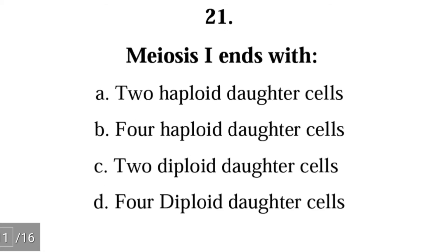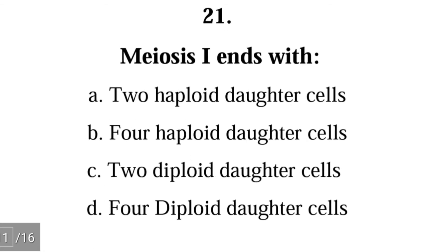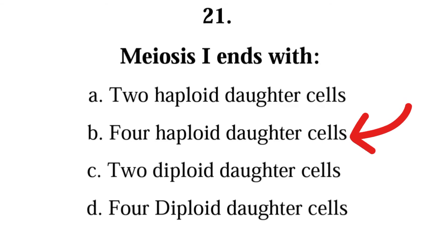Question 21: Meiosis 1 ends with — A. 2 haploid daughter cells, B. 4 haploid daughter cells, C. 2 diploid daughter cells, D. 4 diploid daughter cells. The correct answer is B; meiosis 1 ends with 4 haploid daughter cells.